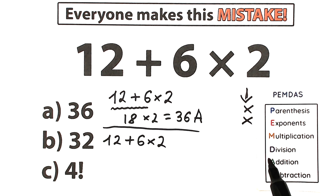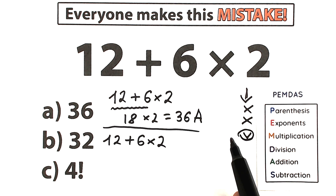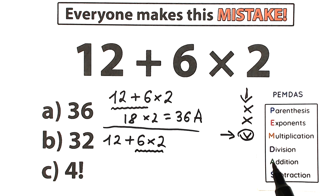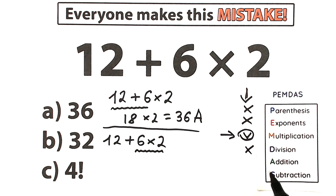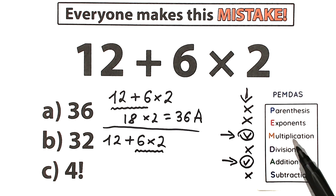The next step is the multiplication and division group. Let's scan the expression – we have a multiplication sign here, so we are interested in that. For division, addition, and subtraction – the last steps – we don't have division, but we do have an addition sign. So in our expression we have both multiplication and addition.